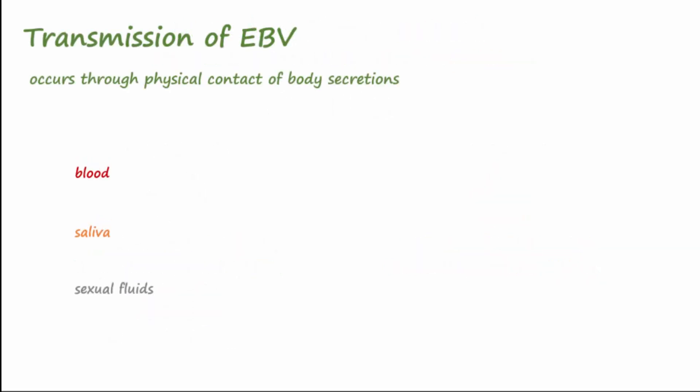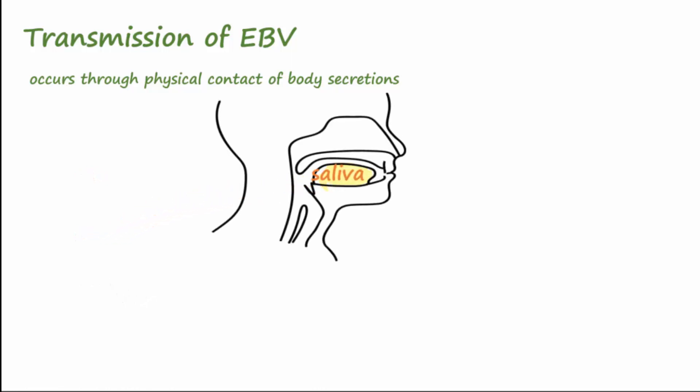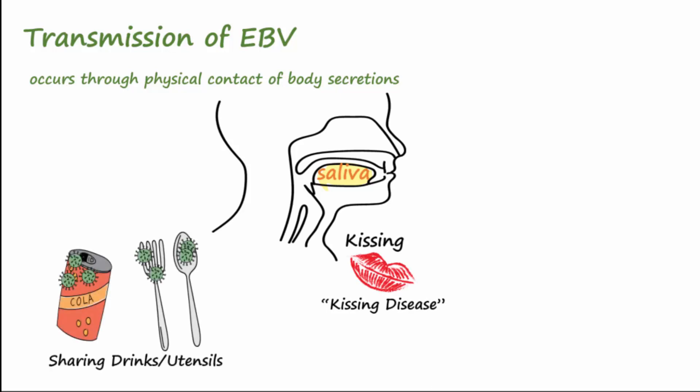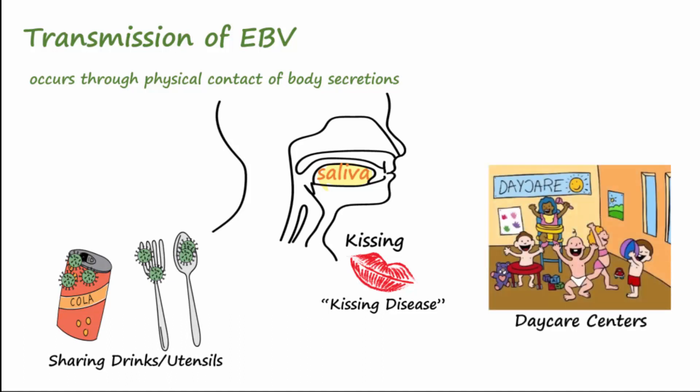Transmission of EBV occurs through physical contact of body secretions, including blood and other body fluids, but especially saliva. Because kissing is a common mode of transmission, mono is known as the kissing disease. EBV can also be spread through saliva by sharing drinks and utensils. For children, daycare centers are prime locations for spread.